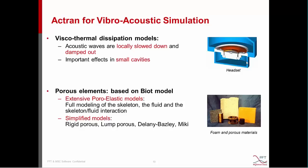We might also want to add some porous materials, for example in the back cavity of a loudspeaker. Actran features porous elements and porous material models. They are all based on the Biot model, and Actran features both extensive poro-elastic models and simplified models. The extensive models allow full modeling of the skeleton, the fluid, and the skeleton-to-fluid interaction. Whereas the simplified models allow quickly modeling these kinds of materials — including rigid porous, limp porous, and semi-empirical models such as the Delaney-Bertoli model or the Miki model.